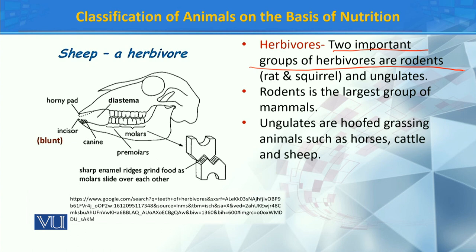Now talking about Herbivores further — two important groups of Herbivores are Rodents and Ungulates. Rodents are animals that gnaw their food, breaking it into small pieces, like rats. Ungulates are animals that chew the cud (ruminate). Rodents are the largest group of mammals, while Ungulates are a smaller group.